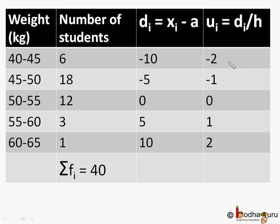So for the first row, u1 equal to d1 by h, which will be minus 10 by 5, which is equal to minus 2. For the second row, u2 equal to d2 by h, this will be minus 5 by 5 equal to minus 1 and so on.